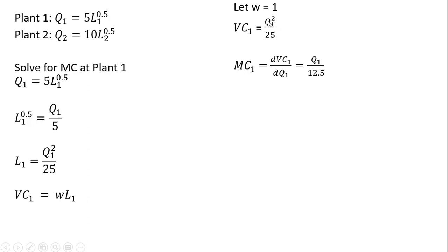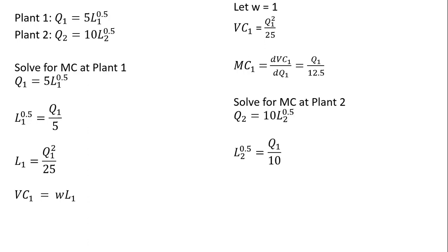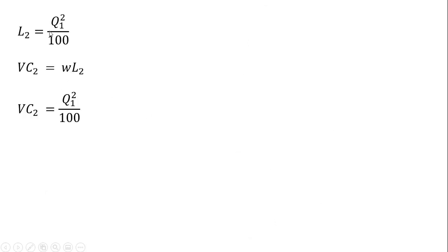Bringing the two down in front of the exponent: two divided by 25 is just 1 over 12.5. Following the rules of differentiation, the exponent becomes 2 minus 1, leaving us Q raised to the power of 1, or just Q. We do a similar thing for plant two: take the production function for plant two, solve it for L, square both sides, create the variable cost equation, and make our substitutions — W is again 1, giving a slightly different expression for L. Taking the derivative of variable cost with respect to output, we get this result: two divided by 100 is just 1 over 50.